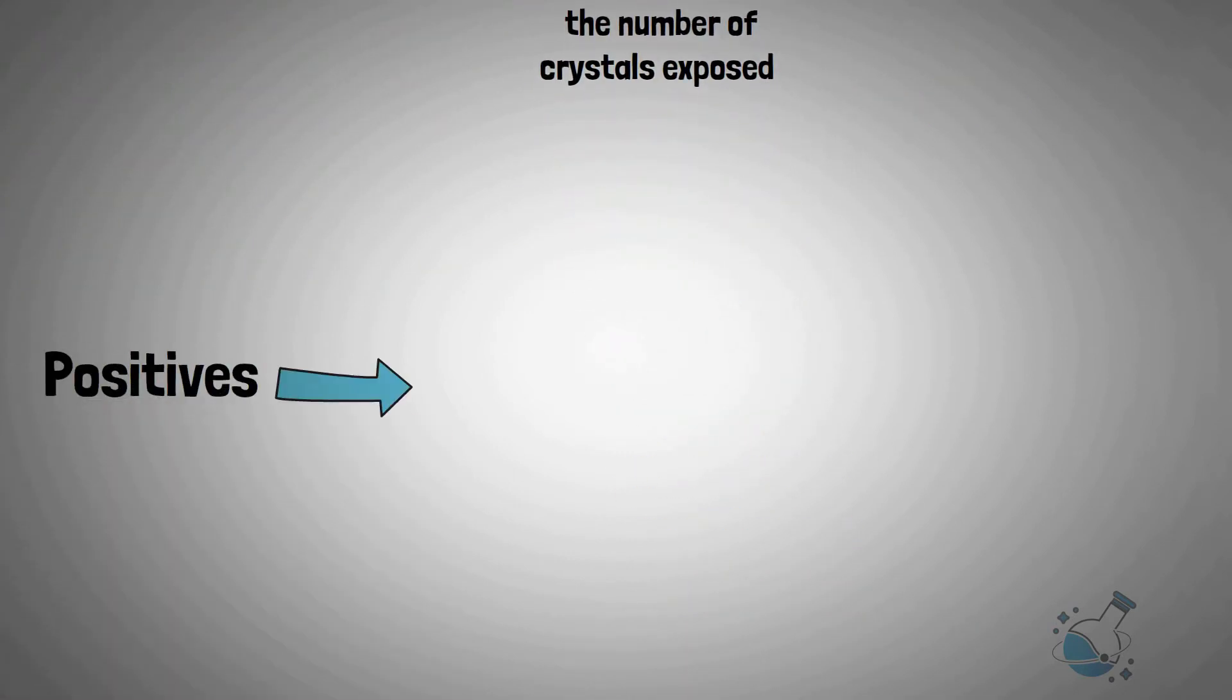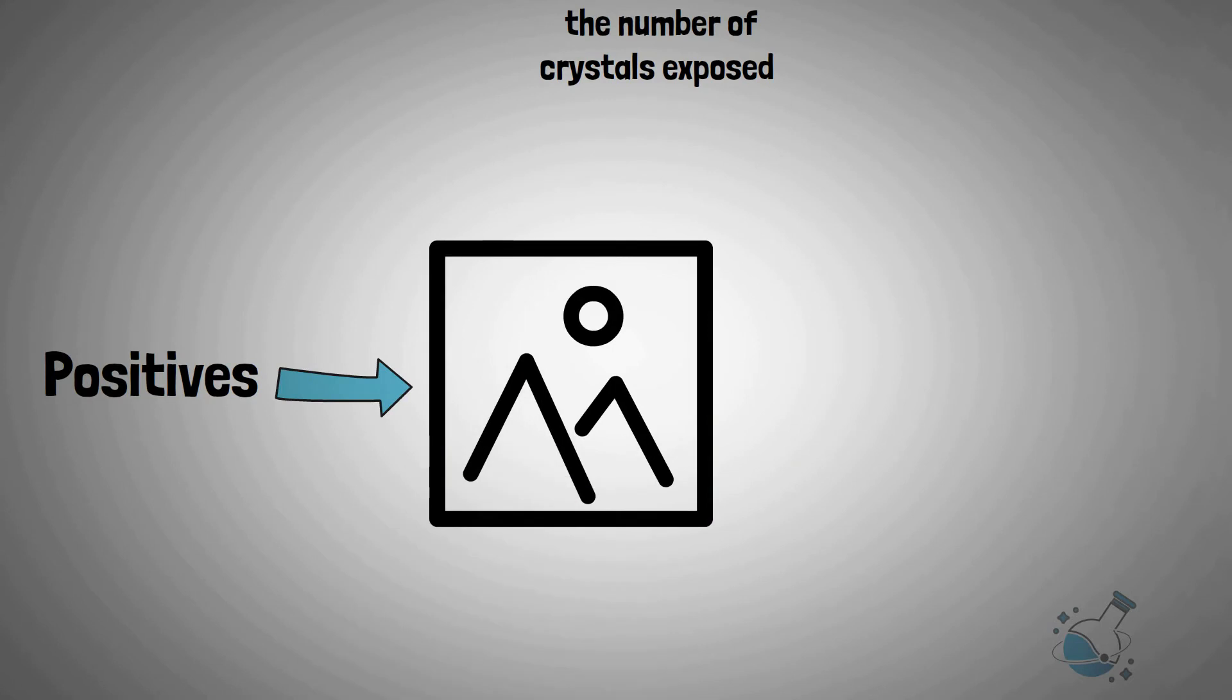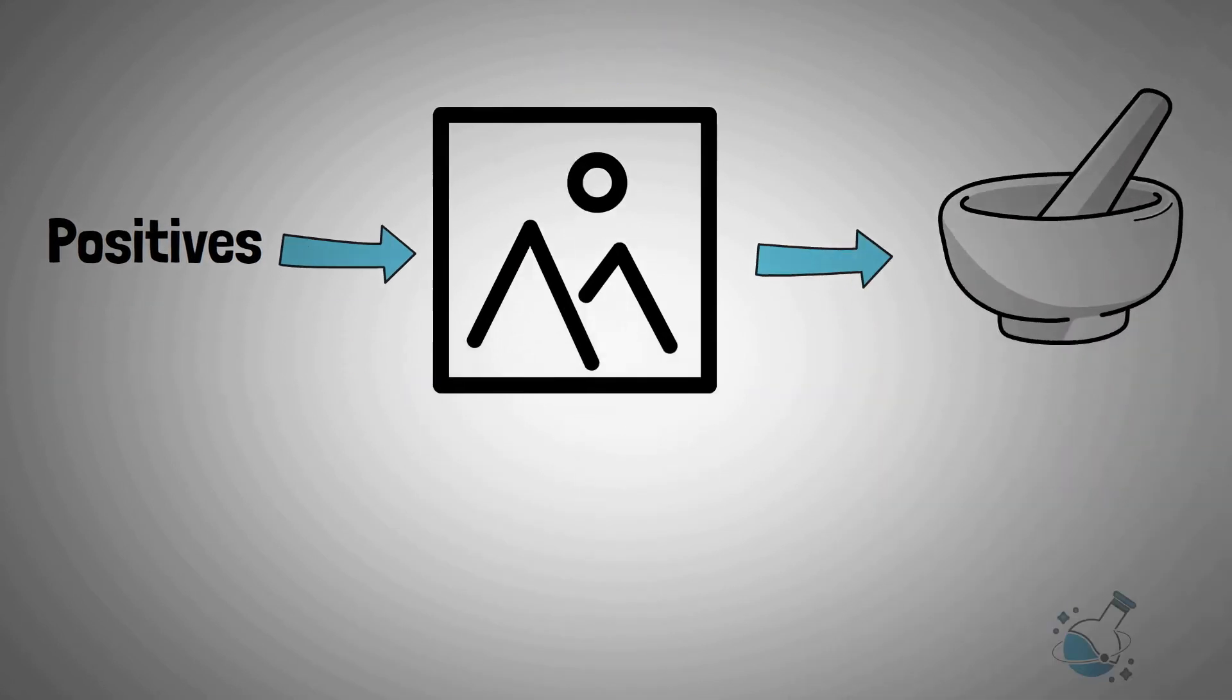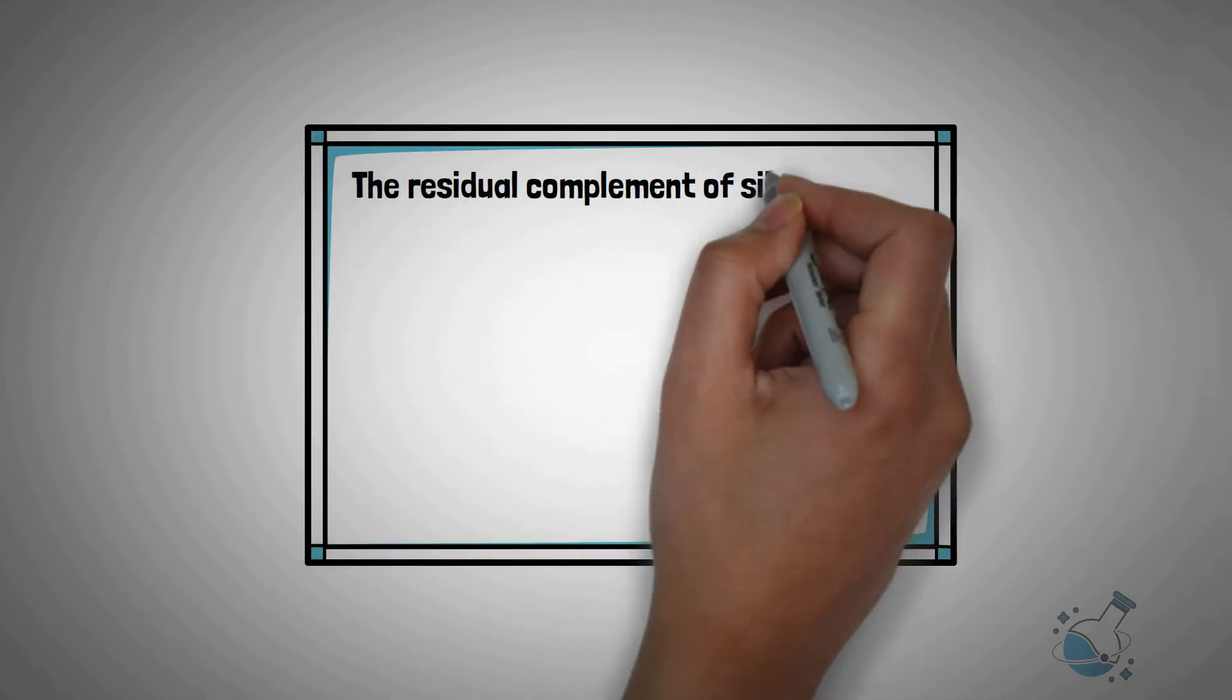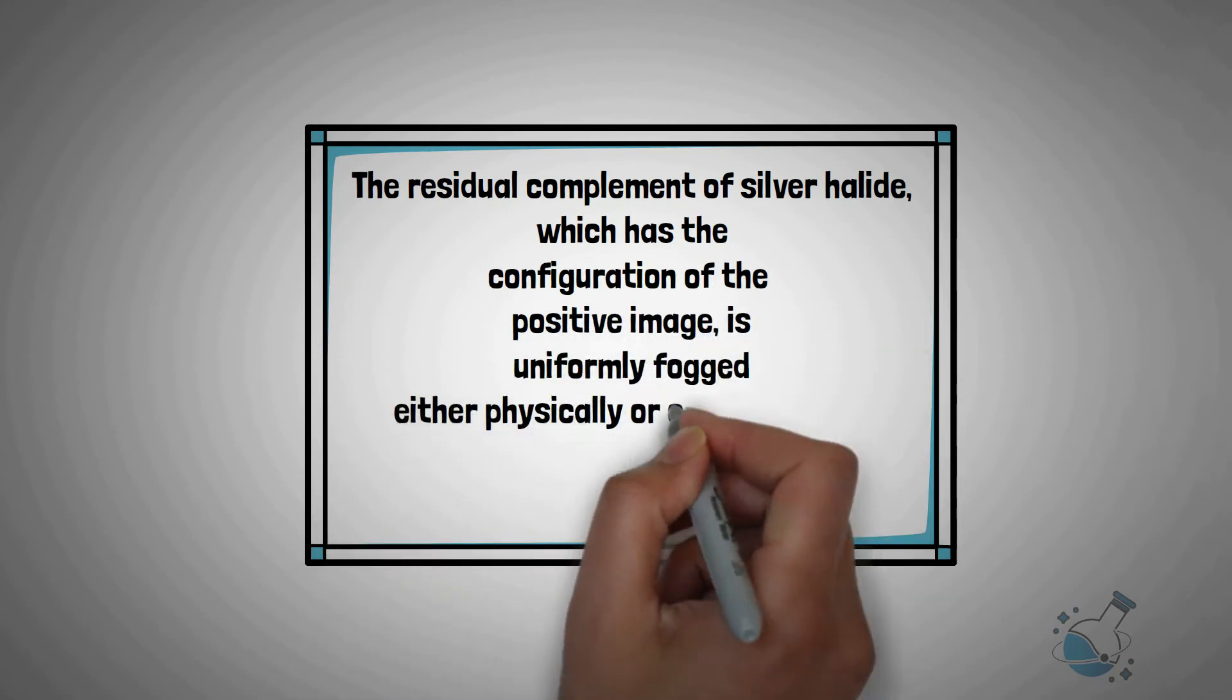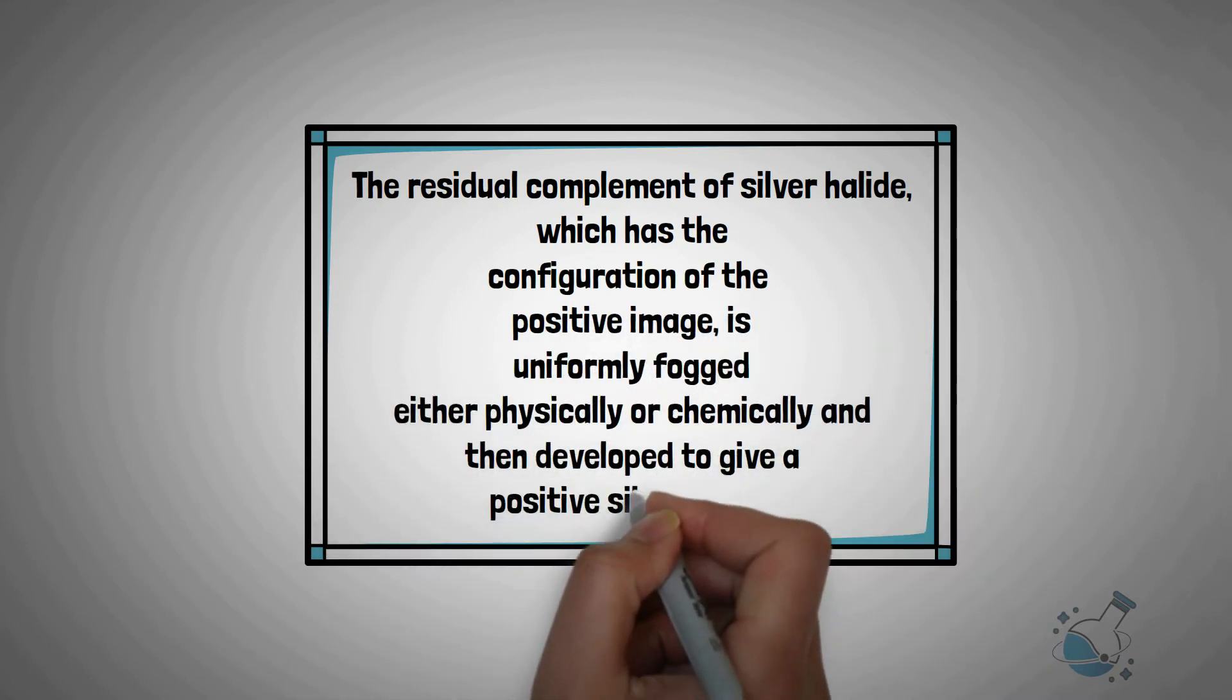Positives are generally produced by first developing the negative silver image and then dissolving the silver image in an oxidizing solution or bleach. The residual complement of silver halide, which has the configuration of the positive image, is uniformly fogged either physically or chemically, and then developed to give a positive silver image.